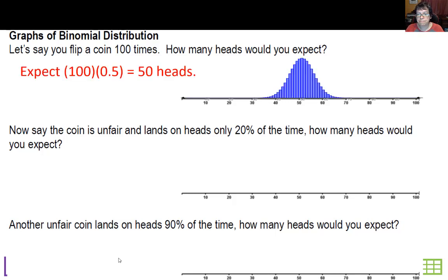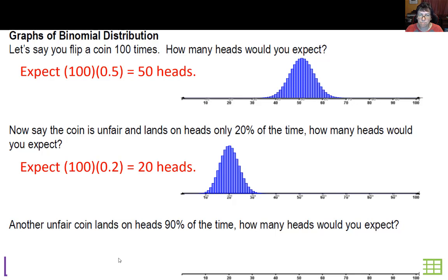Now if the coin is unfair and lands on heads only 20% of the time, how many would you expect? Twenty, right, so your peak would be there at 20. Another coin lands on heads 90% of the time, so you'd expect 90 heads, distributed over to the right.